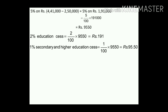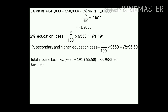Now these three amounts are added. Total income tax = 9,550 + 191 + 95.50 = rupees 9,836.50. Mr. Kartar Singh will have to pay rupees 9,836.50 as income tax. This is how you calculate your income tax.